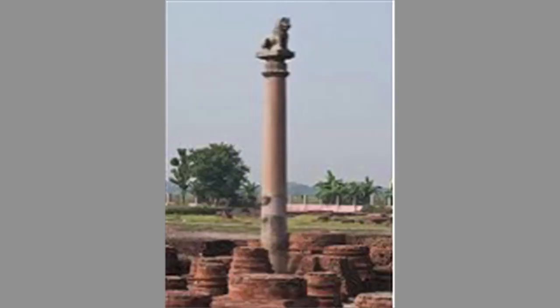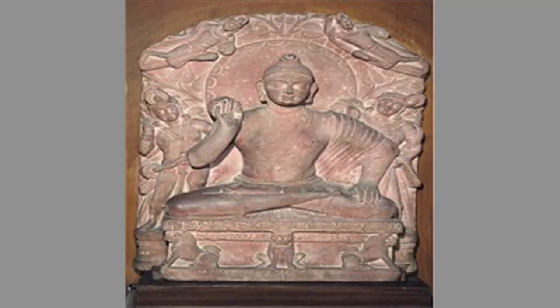The traditional centre Mathura remained the main art production site, whereas Kosambi and Sarnath also emerged as important centres of art production. Spotted red sandstone was used in this school. Themes in Mathura art vary from Buddhist to Brahmanical to sometimes secular. More stress was given to inner beauty and facial emotions rather than bodily gesture.